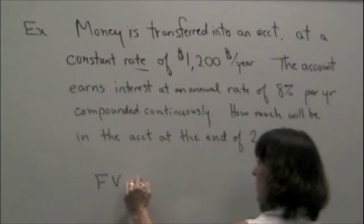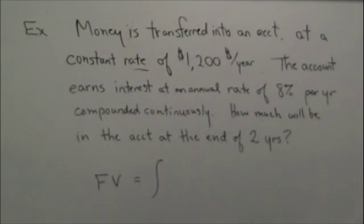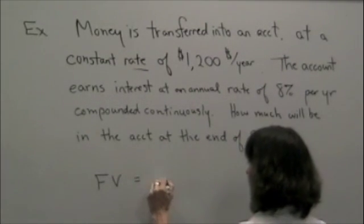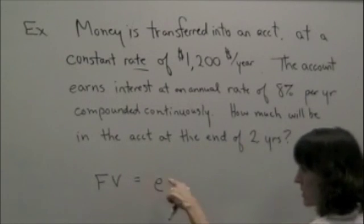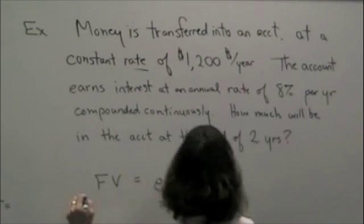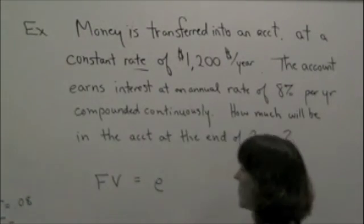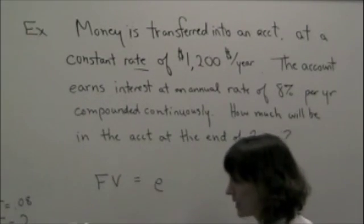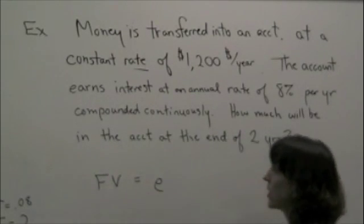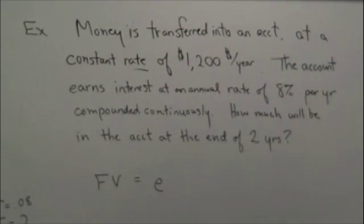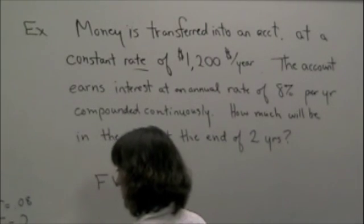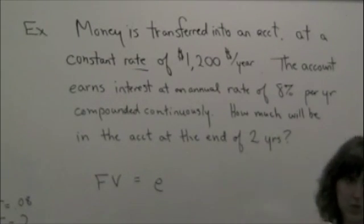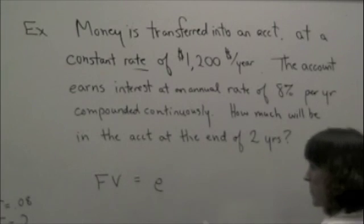Future value is equal to, oh I forgot my E, e to the RT. What do I know? I know R is equal to 0.08. I know capital T is equal to two years. And the other thing that I need is my function f of t. Money is going in at the constant rate of 1,200, so that's how money was going in at a rate given by function f of t. In this particular case, it's a constant. Sometimes it's a function, sometimes it's an e to the t.